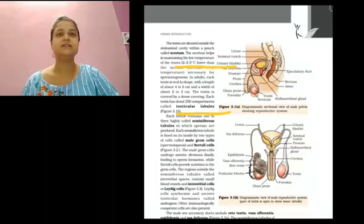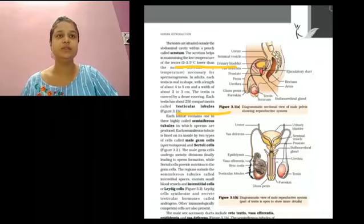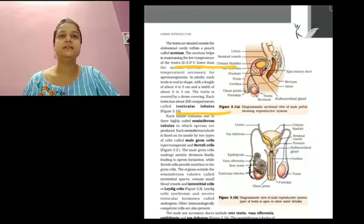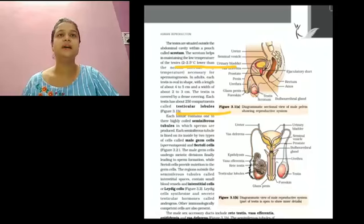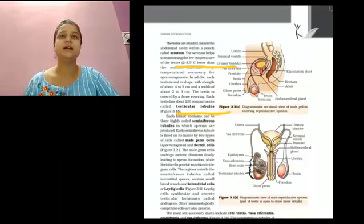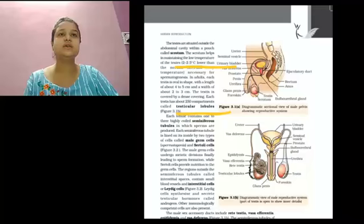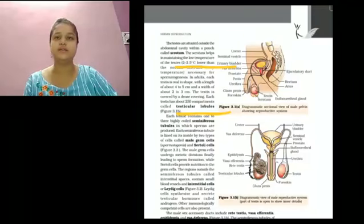The spermatogonia are the immature male germ cells that undergo meiosis leading to the formation of sperm. Each sperm or spermatogonium is diploid and consists of 46 chromosomes. Sertoli cells provide nutrition to the spermatogonia in the initiating space. There are regions outside the seminiferous tubules that contain small blood vessels, some immune component cells, and interstitial cells or Leydig cells. The Leydig cells synthesize and secrete testicular hormones called androgens.